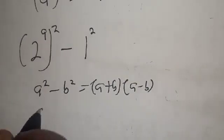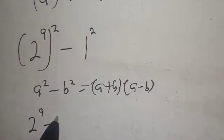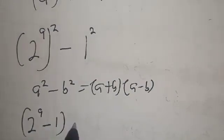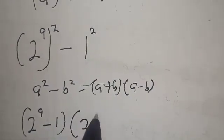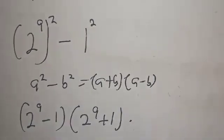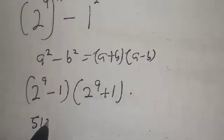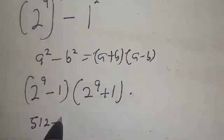Now we have 2 raised to power 9 minus 1, multiplied by 2 raised to power 9 plus 1. 2 raised to power 9 is 512. This is 512 minus 1